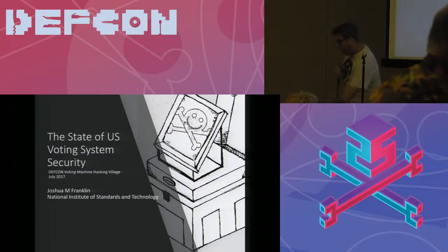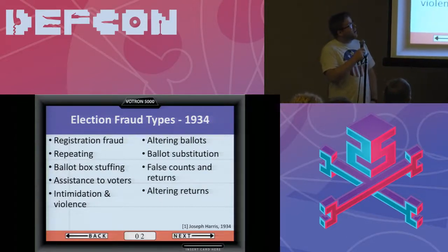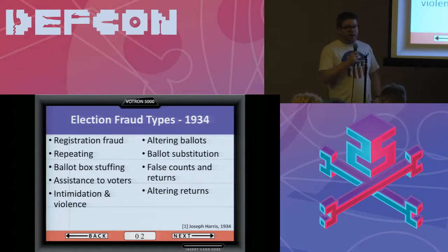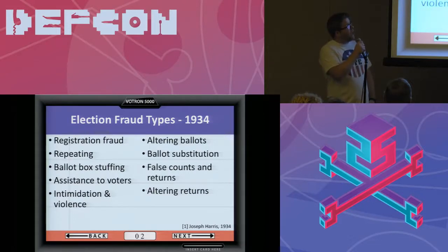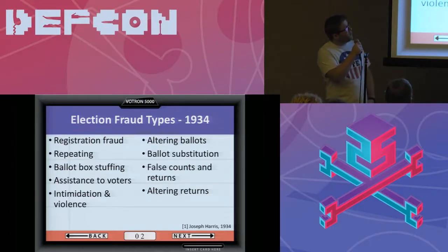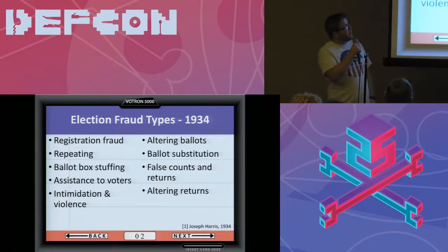First off, I'm going to start with this slide. There was a man named Dr. Joseph Harris back in 1934, and he was basically looking at how elections are run in the U.S. back then. He actually found various election fraud types, as he called them. It's really interesting looking at this list, because we're still really worried about many of these issues today. Since 1934, we've learned about computers and introduced e-voting, and now we have those same issues plus modern electronic analogs.